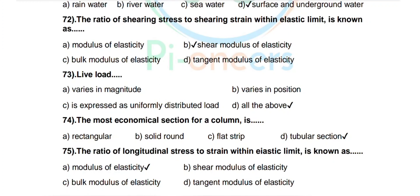Question 74: The most economical section for a column is — options: rectangular, solid round, flat strip, tubular section. Correct answer: tubular section. Question 75: The ratio of longitudinal stress to strain within the elastic limit is known as — options: modulus of elasticity, shear modulus of elasticity, bulk modulus of elasticity, tangent modulus of elasticity. Correct answer: modulus of elasticity.